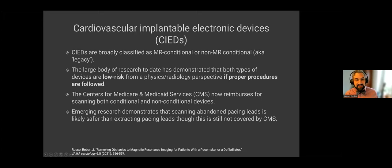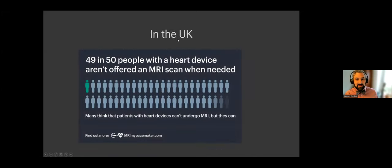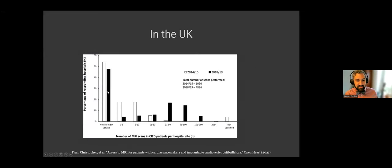So I mentioned that despite the lower risk, if you do this right, most patients are still getting denied for CIED scanning. In the United States, it's about 300,000 per year. But this is a global seminar. So we're going to talk about some other countries too. In the UK, 49 out of 50 people with a heart device aren't getting offered an MRI scan when needed. This is just showing that a different way from a different study. Over time, the white is 2014, 2015, and the black is 2018, 2019. And you can see that still about half of facilities in the UK are not offering CIED scanning.